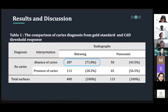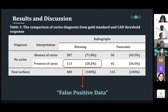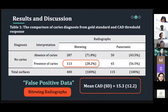This showed that the ability of the CAD to analyze non-carious detection from bitewing radiograph was under-evaluated. There was only 71.8 percent of non-carious surfaces correctly diagnosed compared to the gold standard. On the other hand, 113 tooth surfaces or 28.2 percent were shown as present with proximal caries status, considered as false positive data. The false positive data produced in bitewing radiograph had a mean CAD threshold value of 15.3 and SD of 12.2, indicating a considerably low false positive threshold.